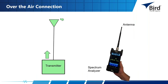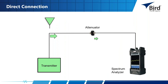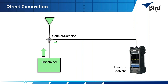For an over-the-air connection, the transmitter puts out a signal that goes up to its antenna, leaves there, and arrives at the antenna on the test port input of the spectrum analyzer. For a direct connection, if your signal is above +20 dBm out of the transmitter, you want to put an attenuator on it to limit power going into the analyzer. You can also connect directly to an antenna through a sampler or coupler, with the coupled signal going into the spectrum analyzer.